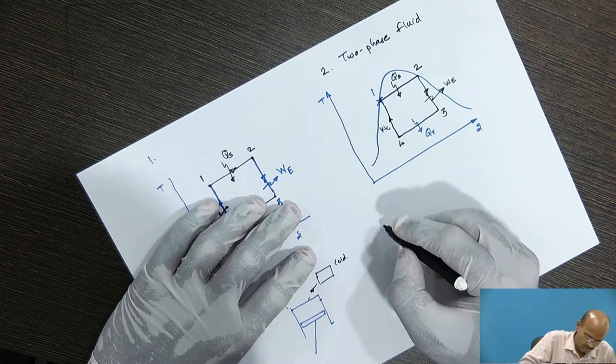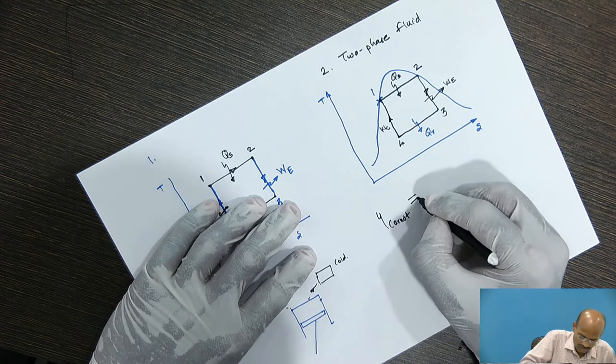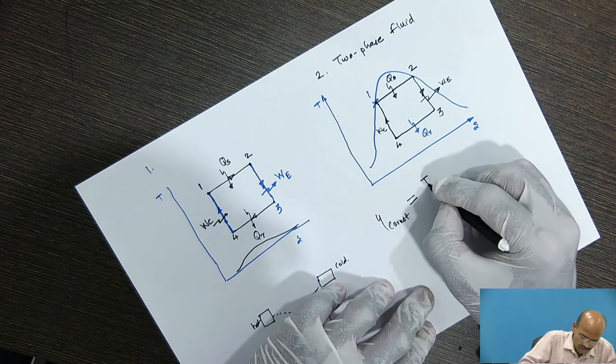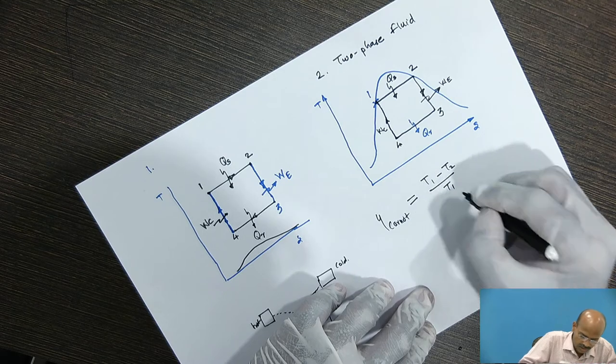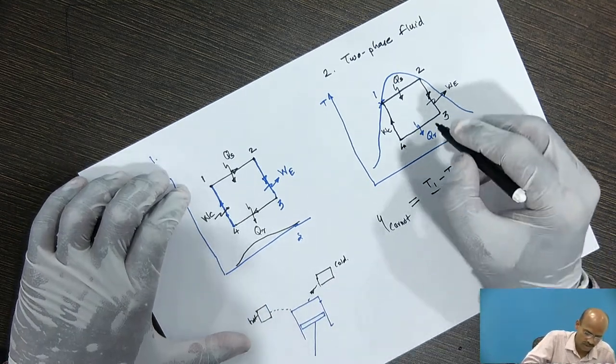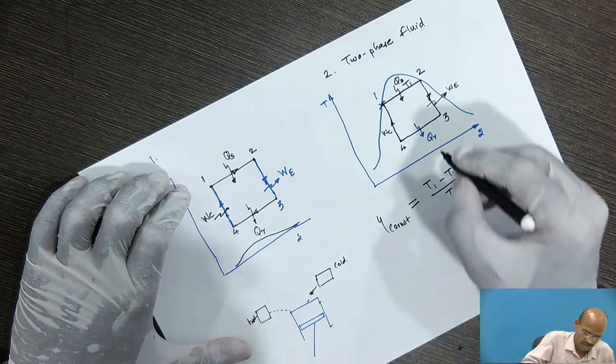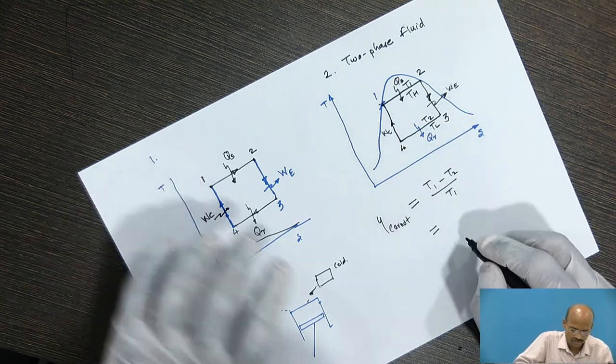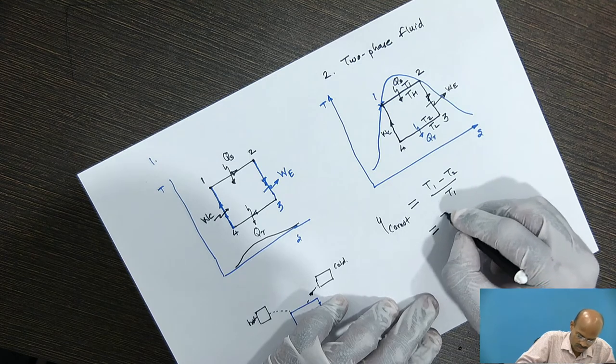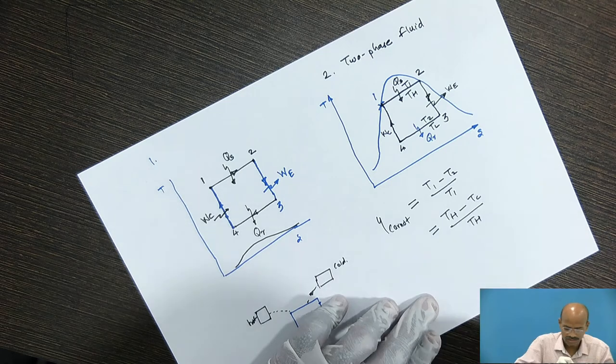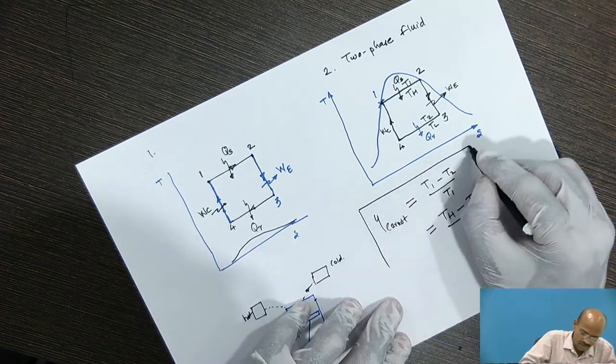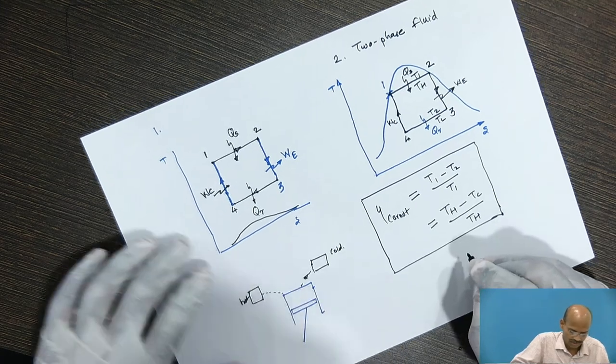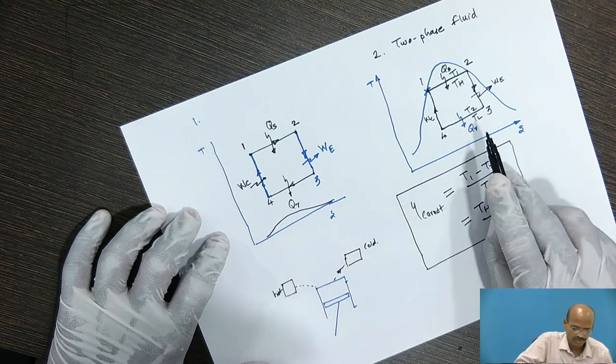Now, how to calculate the efficiency? So Carnot efficiency, Carnot efficiency which is maximum possible efficiency or theoretical efficiency is T1 minus T2 divided by T1. Now, what is T1? Do not get confused with the notations. T1 is the high temperature energy reservoir and T2 is low temperature energy reservoir. We could write this as TH and TL also. So there may be confusion in the notations. So I could write TH minus TC by TH. So this is the equation which can be used for calculating the Carnot efficiency. Now, this equation is applicable for single phase fluid also and for two phase fluid also.